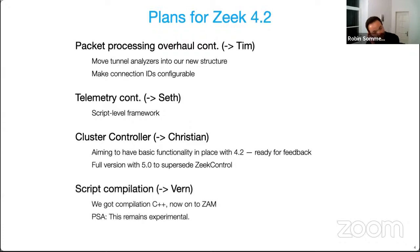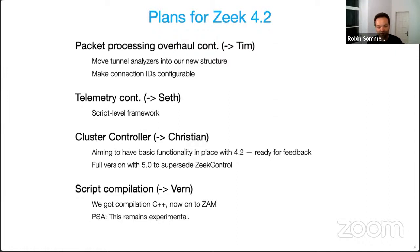Script compilation is something that Vern has started to add in 4.1. Zeek now comes with a compiler of Zeek scripts to C++. It's still experimental, but essentially it allows you to take a Zeek configuration with all the scripts and turn it into C++ code and compile it right into Zeek. For 4.2, there's a second compiler coming — the ZAM, the Zeek Abstract Machine — which provides a different approach. Vern is going to talk more about both of these. This is experimental functionality, so we explicitly keep it out of our maintenance guarantees for the time being.